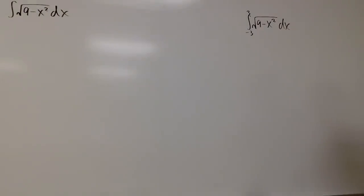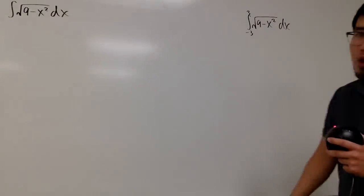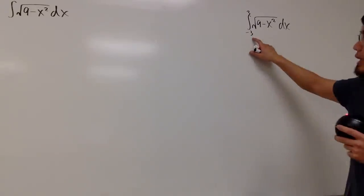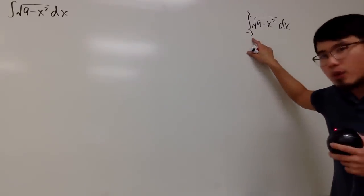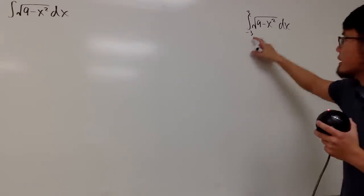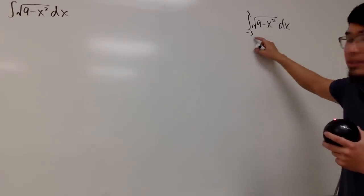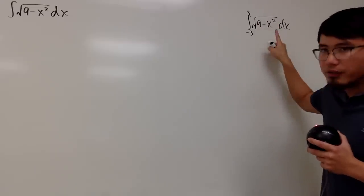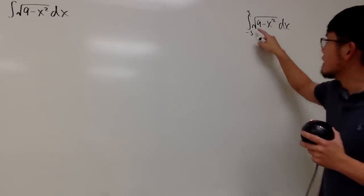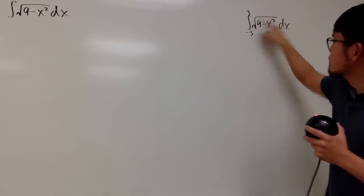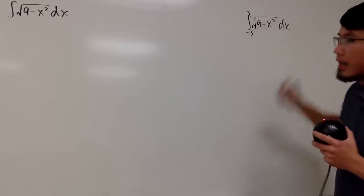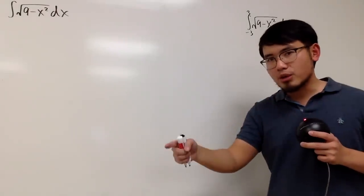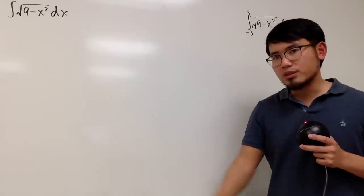Let's tackle this one first. When we have a definite integral, remember, we can interpret this as the area under the curve. And when you graph square root of 9 minus x squared, you just get a semicircle with radius 3.